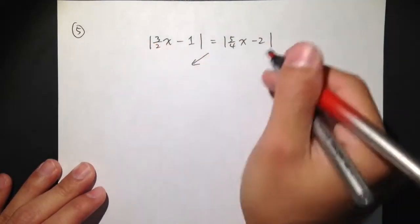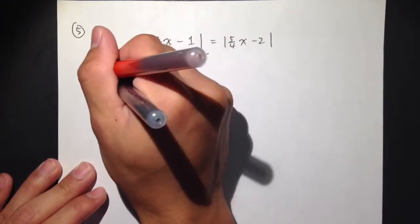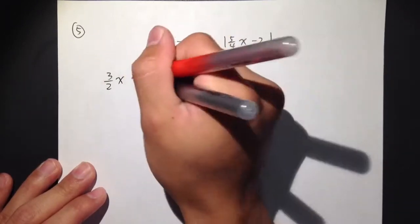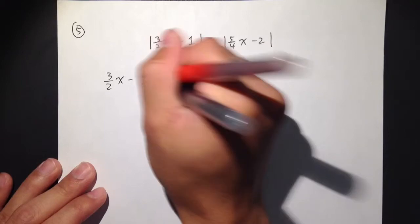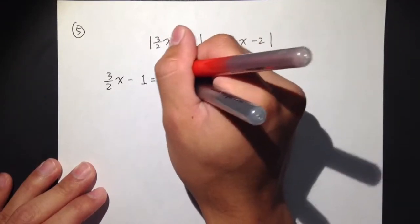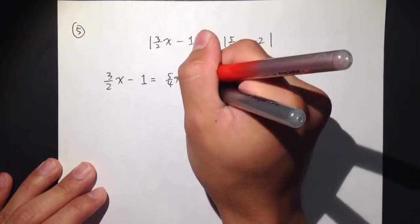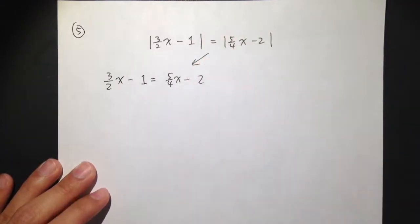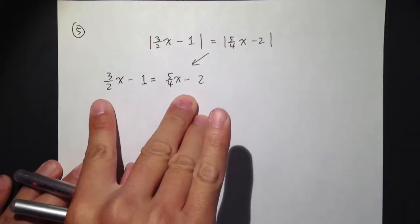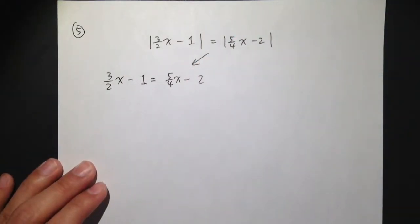First, let's take out all the absolute values, and then we will have 3 over 2x minus 1, and that's equal to 5 over 4x minus 2. Just take out all the absolute value, nothing changes.